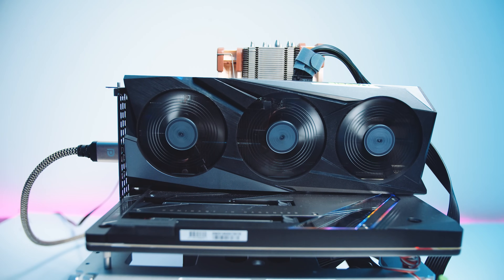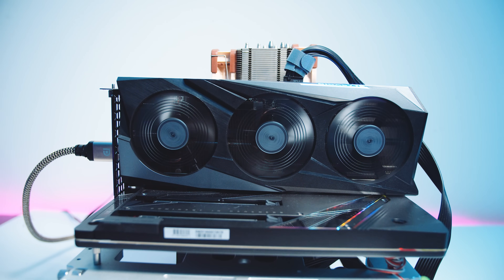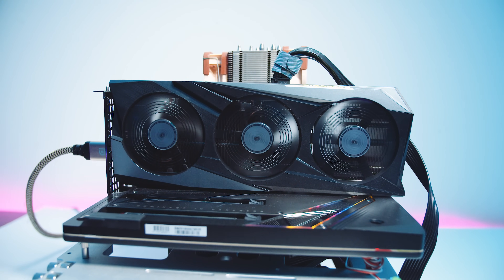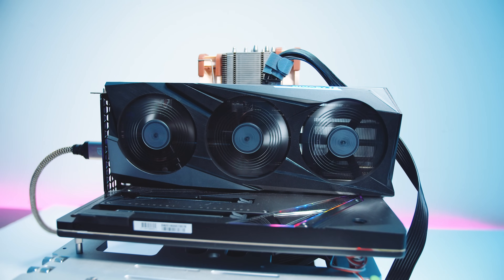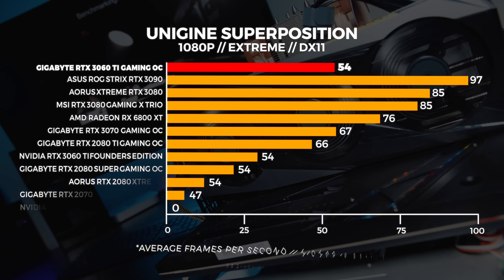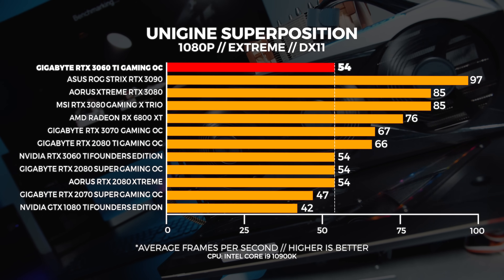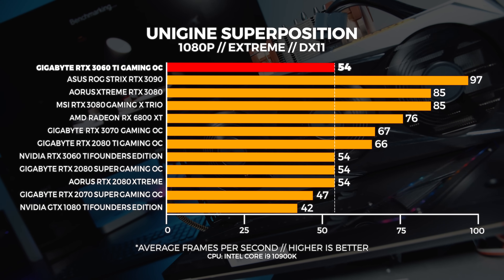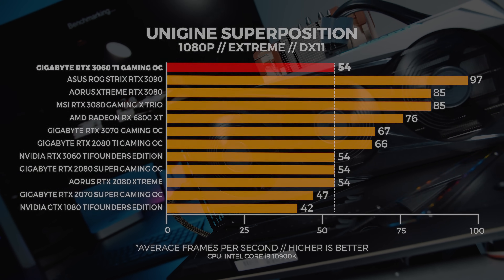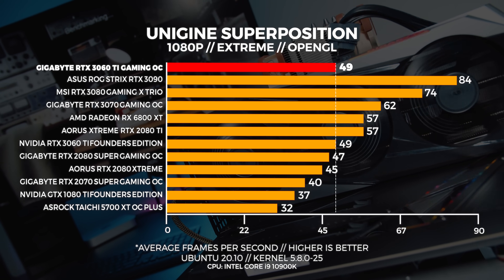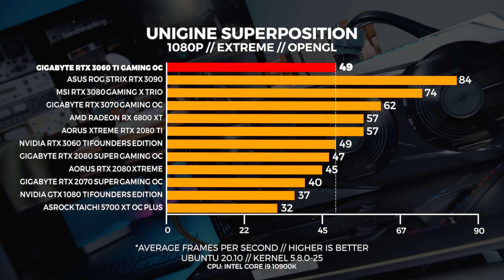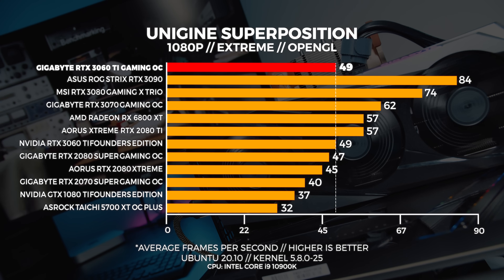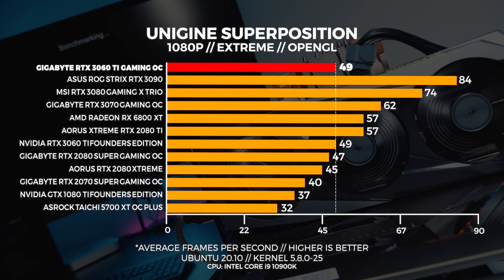Let's move on to Superposition. We performed three tests: a 4K optimized preset, 1080p extreme preset, and a custom 1440p preset with depth of field and motion blur turned off. We're only comparing the out-of-the-box experience. At 1080p extreme — which is highly GPU bound — we're seeing the Gaming OC equaling the 2080 Super and the 3060 Ti Founders Edition in Windows. In Linux, the OpenGL version does not perform as well, and that's just how it is out of the box regardless of the kernel or driver. Both 3060 Ti's perform exactly the same at 1080p extreme.